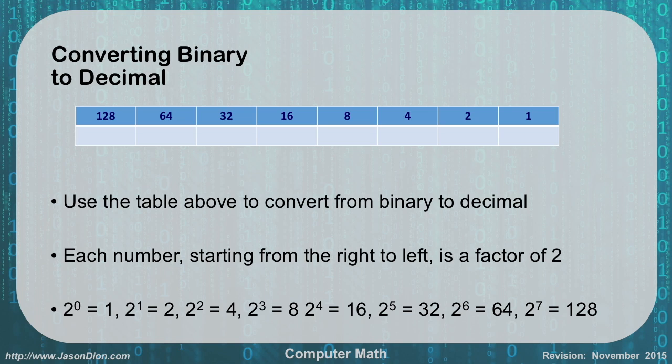And basically it's powers of 2. So 2 to the 0 is 1, 2 to the 1 is 2, 2 to the 2 is 4, 2 to the 3 is 8, 2 to the 4 is 16, 2 to the 5 is 32, 2 to the 6 is 64, and 2 to the 7 is 128. That's where I get my powers of 2 from right to left.